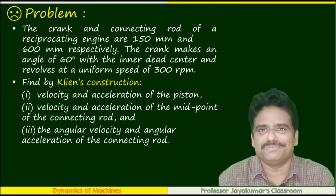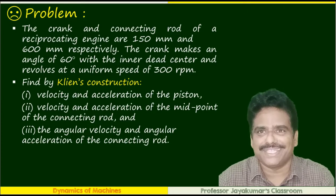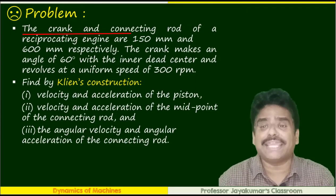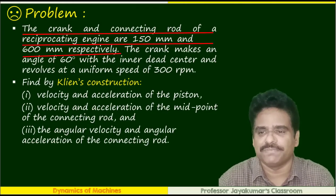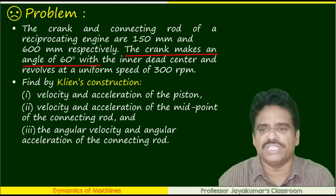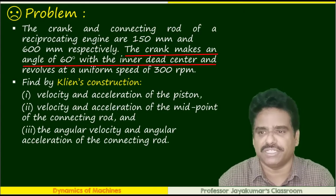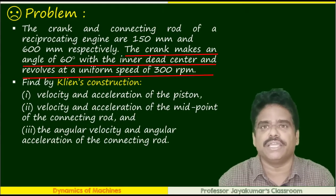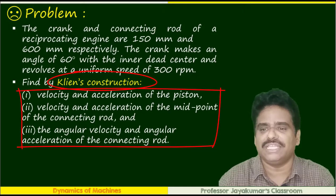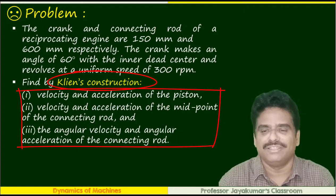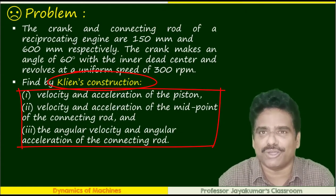This is the numerical problem we are going to solve today. The crank and connecting rod of the reciprocating engine are 150 mm and 600 mm respectively. The crank makes an angle of 60 degrees with inner dead center and revolves at a uniform speed of 300 rpm. Find by Klein's construction: velocity and acceleration of the piston; velocity and acceleration of the midpoint of the connecting rod; and the angular velocity and angular acceleration of the connecting rod.